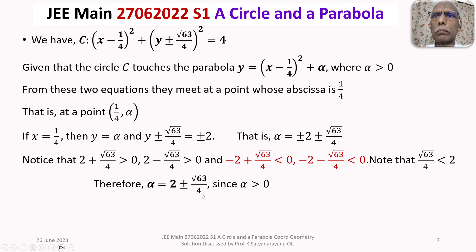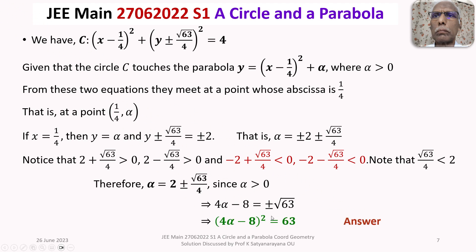Taking the LCM: 4α − 8 = ±√63. Squaring both sides, (4α − 8)² = 63. That is our answer to the given question.